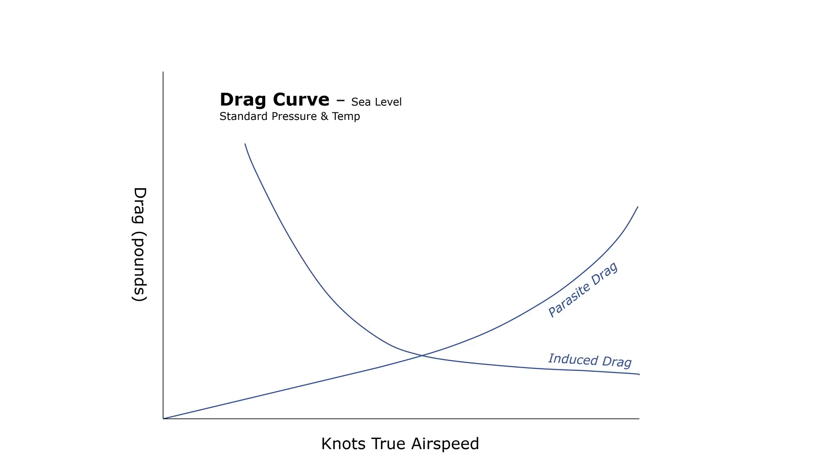Now, as far as the four forces of flight are concerned, we don't make a distinction between induced or parasitic drag. Drag is drag. So what we really want to know is our total drag. We can add up the distances from the horizontal axis of each curve to get our total drag at a certain airspeed.